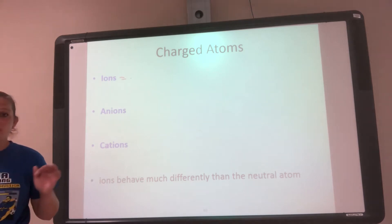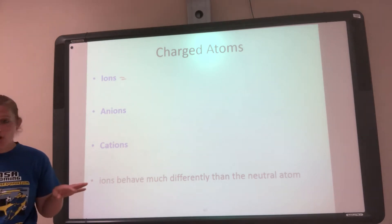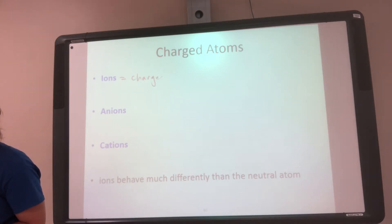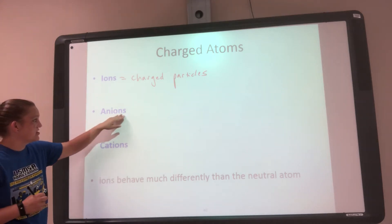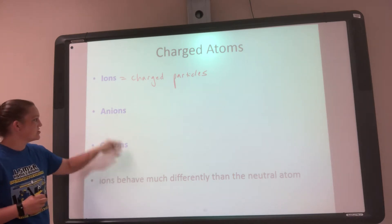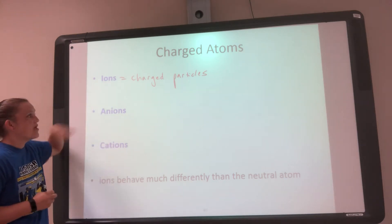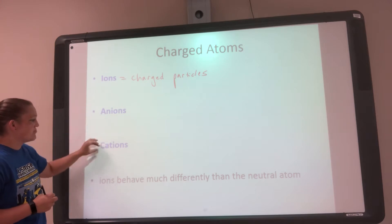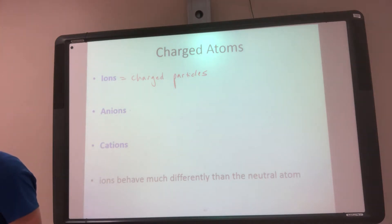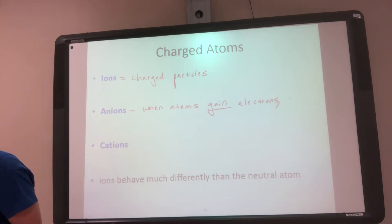If my atom is charged — doesn't matter if it's positively or negatively charged — it's called an ion. So ions are charged particles. I may want to be more specific about the type of ion. If it's negatively charged it's an anion; if it's positively charged it's a cation. Anions form when atoms gain electrons, and this means they are negatively charged ions.